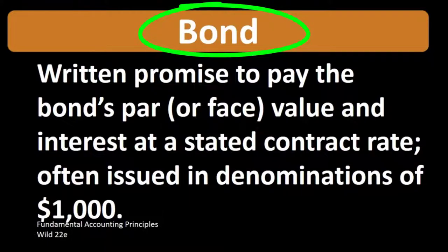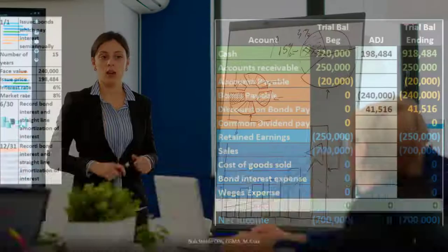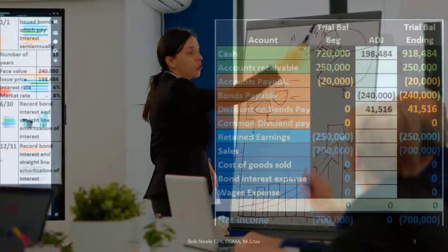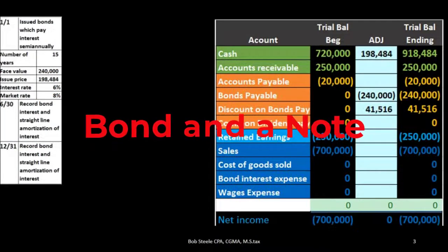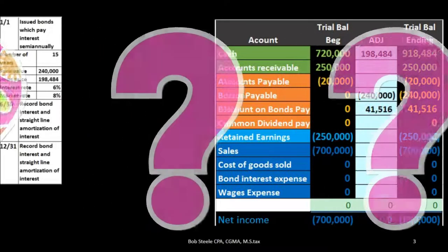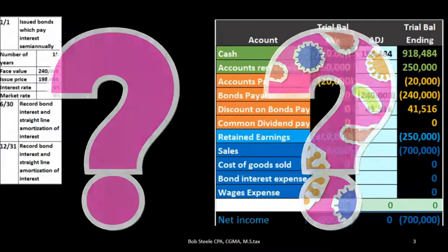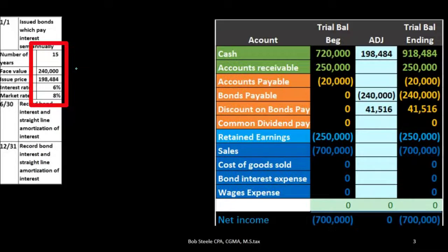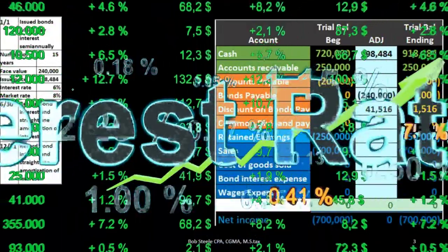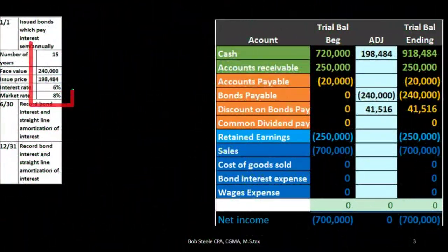When a company issues a bond, it's very similar to a note. When a company needs cash flow, they issue a bond and receive cash. The difference between a bond and a note is essentially what we change in order to issue the bond at the market rate. When we issue a note, we usually adjust the payment patterns and interest rate to reach a free market agreement on an acceptable interest rate for the loan.